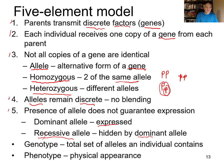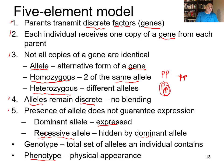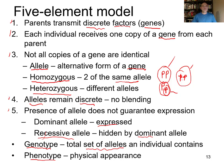Phenotype is what you express: purple or white, tall or short, yellow pea or green pea. Genotype is what you're carrying genetically — the set of alleles. Homozygous dominant (PP), homozygous recessive (pp), or heterozygote (Pp) are genotypes. The genotype is the letters — two copies of the gene. The phenotype is what's expressed, what it looks like.